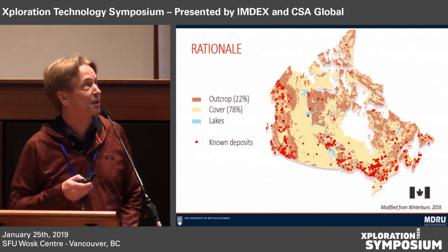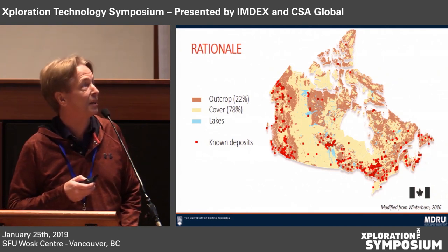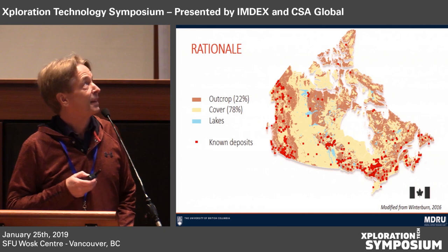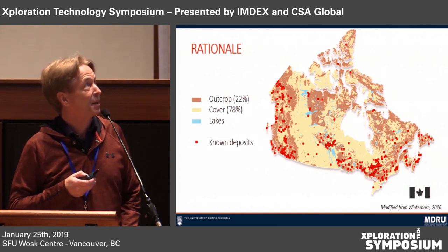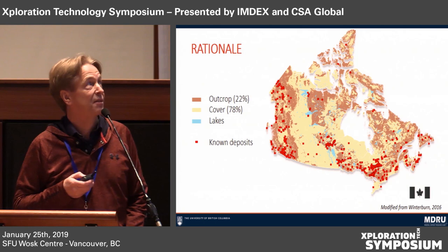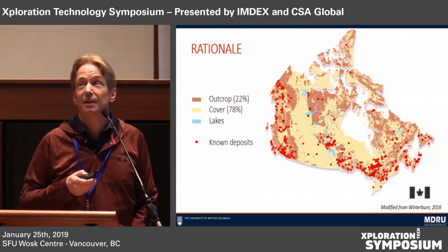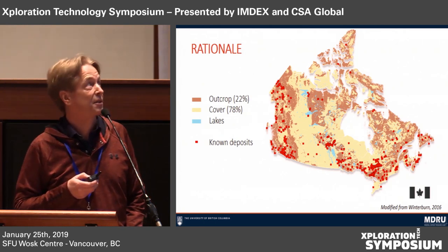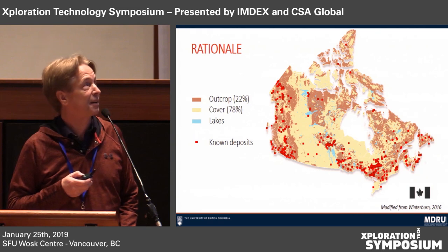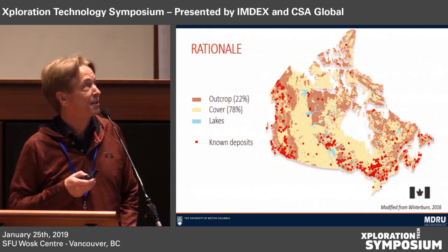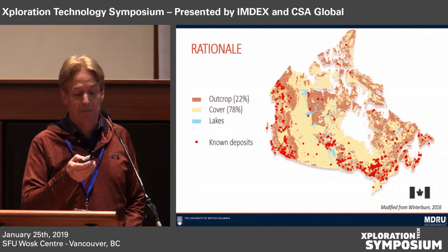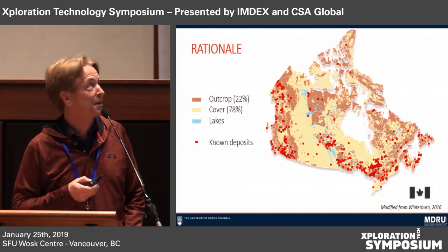How do we find mineral deposits through exotic cover? If you look at a map of Canada, you can very rapidly see that most of the known mineral deposits are actually sitting in areas of outcrop, and there are large swaths of covered terrain in some prime districts of Canada that don't have actually a great deal of mineral deposits on them. In all probability they're there, but they're buried and we just don't see them.